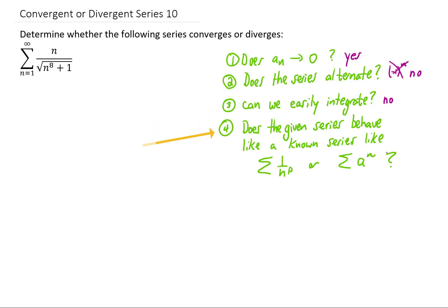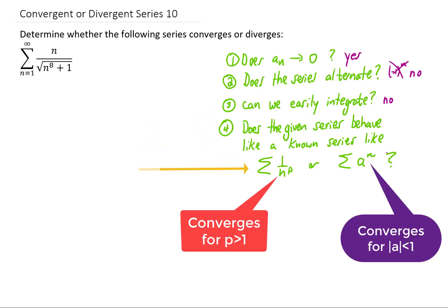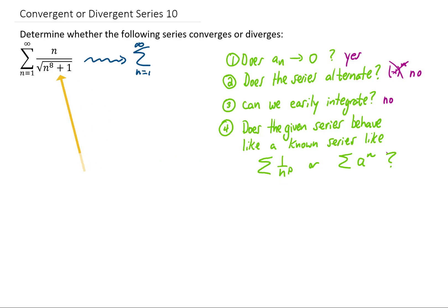So the last question is, do we expect that this series behaves like something we already know? Taking a look back at this series, as n gets really big, we expect the numerator to behave just like n, and as n gets really big in the denominator, we expect this 1 to not play much of a part at all in the value of each term.